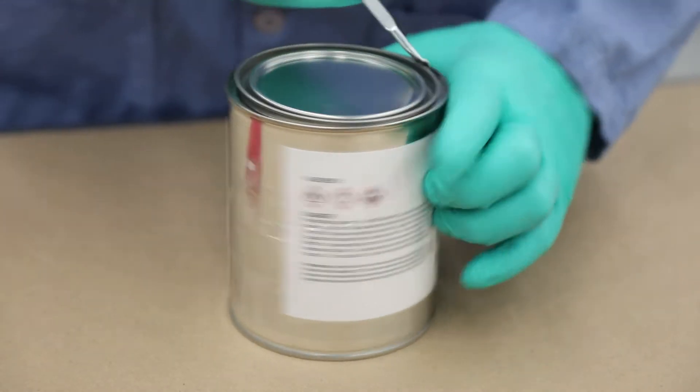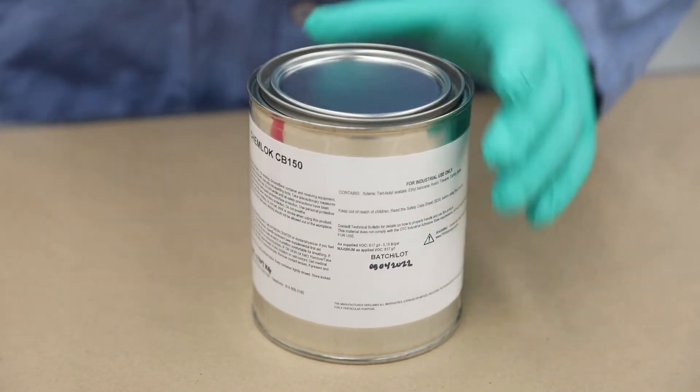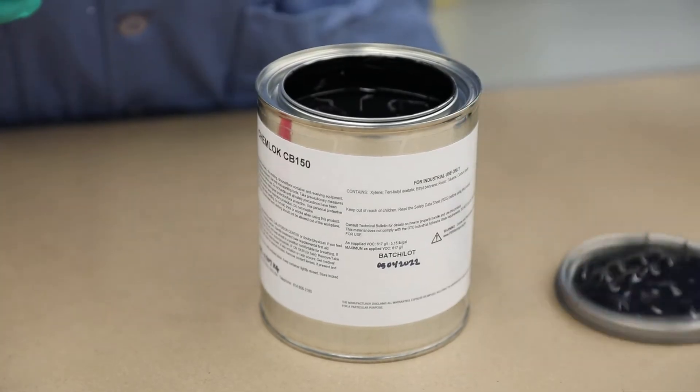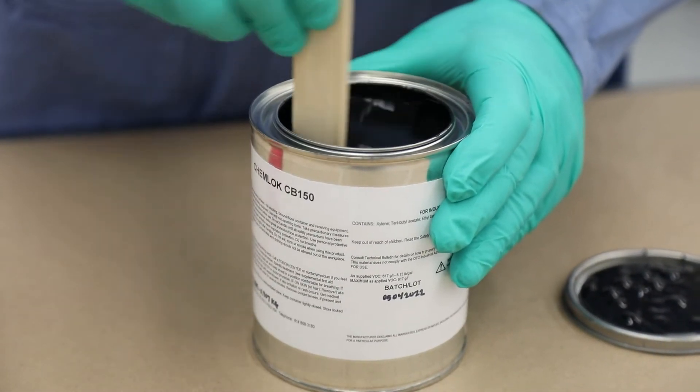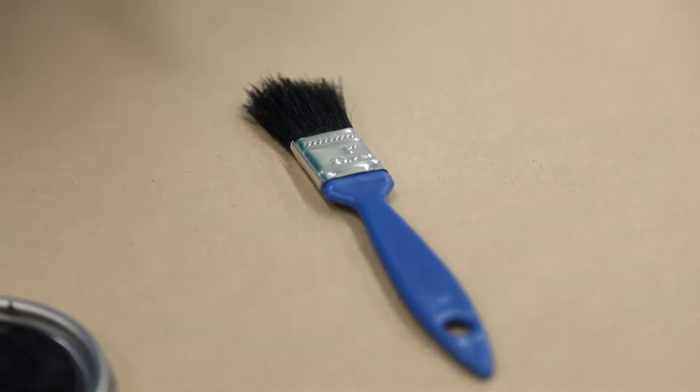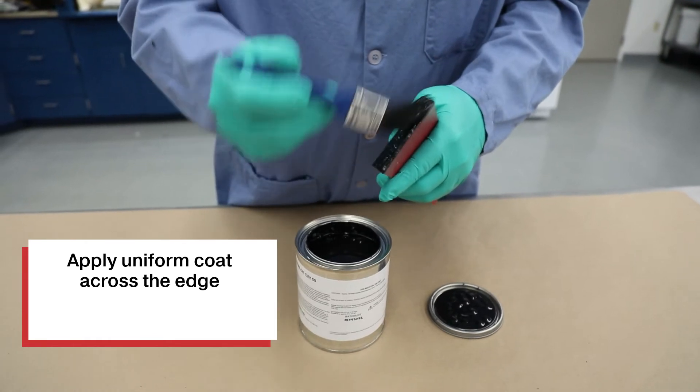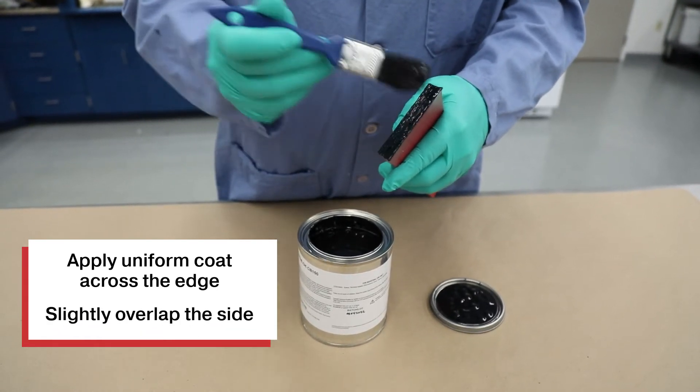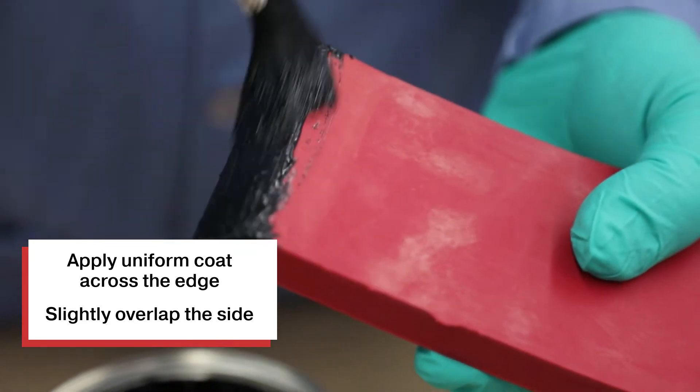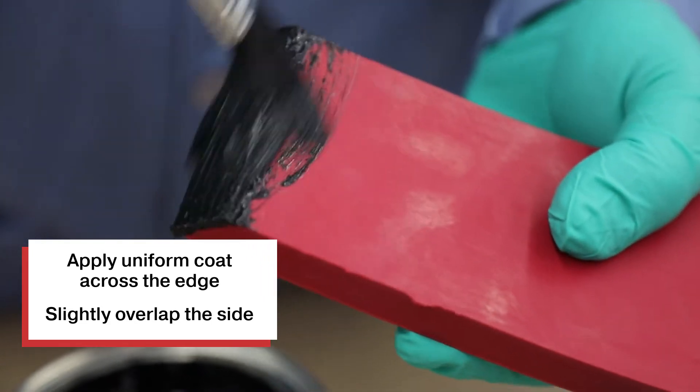Now that the rubber is dry, we're going to give our containers a small mix just to ensure there's no settling, and then apply a uniform coat across the edge of the rubber. You want to slightly overlap the side to ensure that you'll have a good bond.